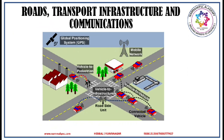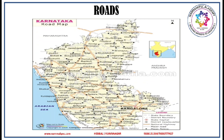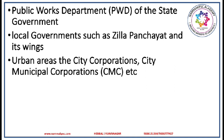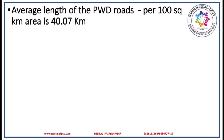Speaking about roads of Karnataka, the state road network consists of national highways, state highways, major district roads, municipal roads and other roads including the village connectivity roads. The road development works in the state is carried out by multiple agencies which include the Public Works Department, local governments and its wings, and city corporations. The roads are maintained by the respective agencies. In the state, the average length of PWD roads per 100 square km area is 40.07 km.